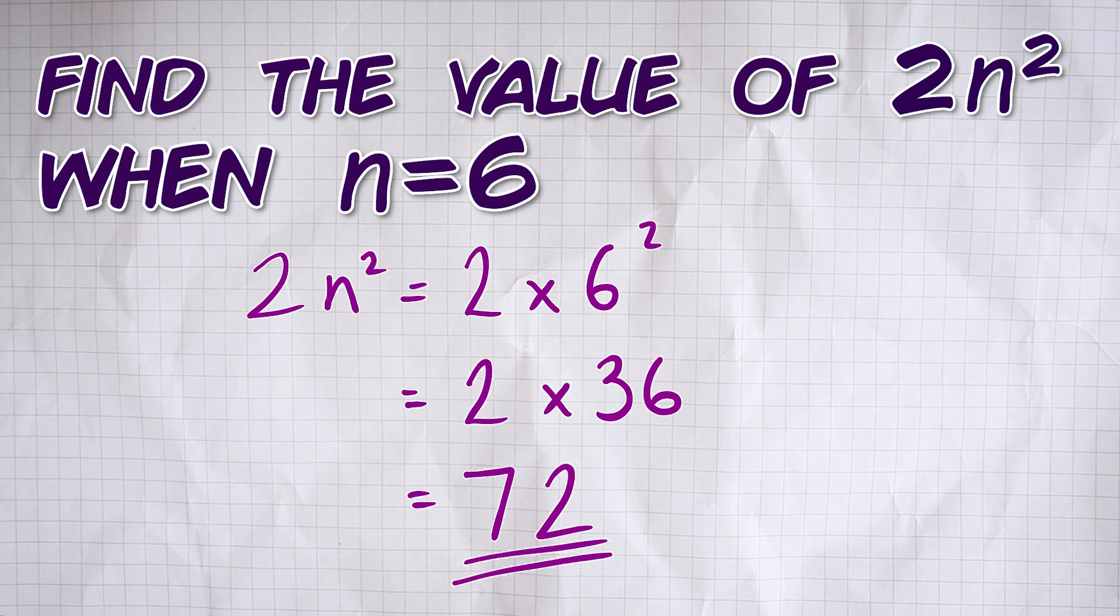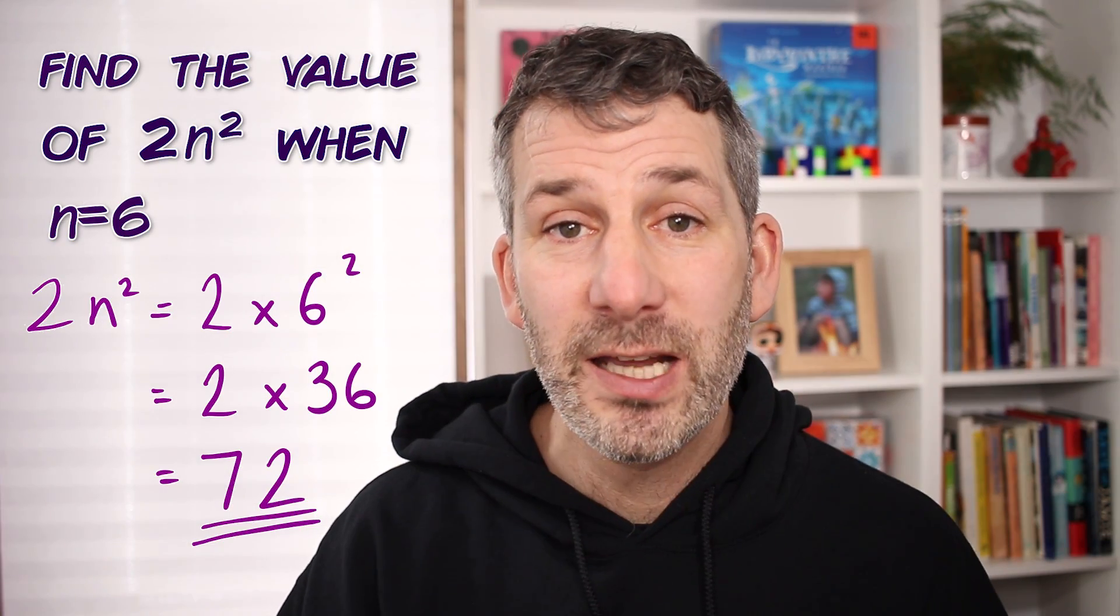So a really easy one to fix this—you just do the powers bit first, you know, that little index number. You calculate that first, then you do the multiplying.